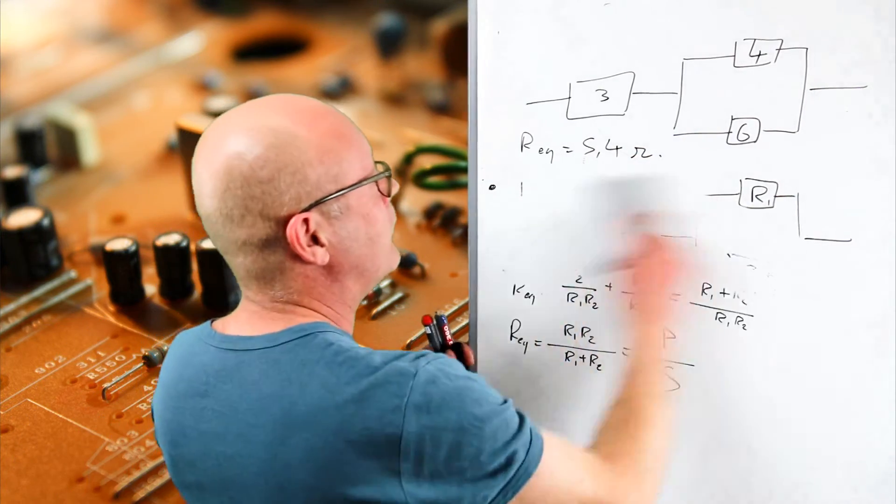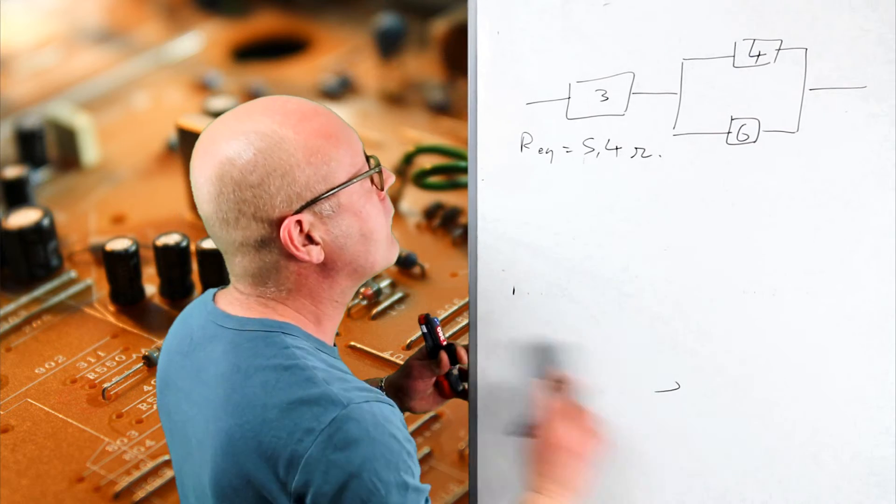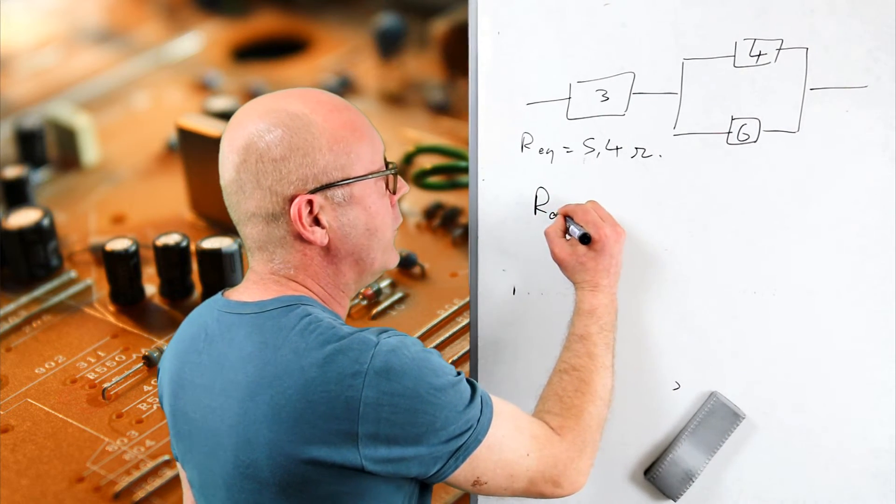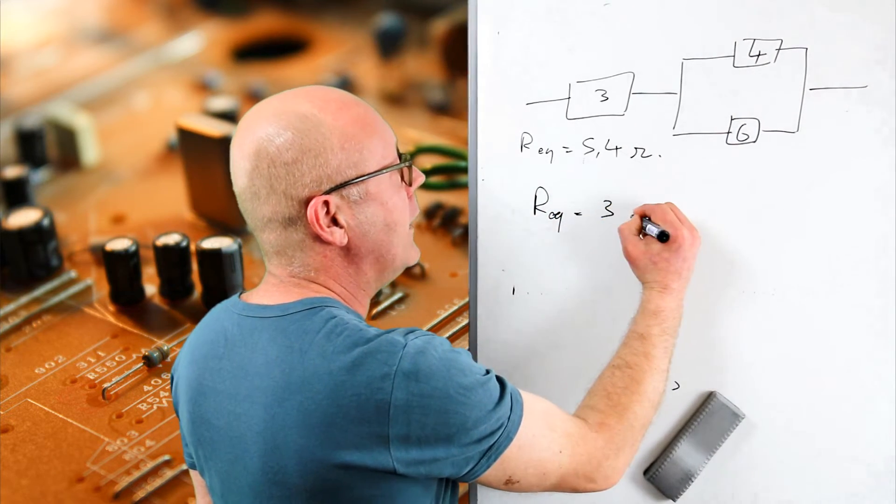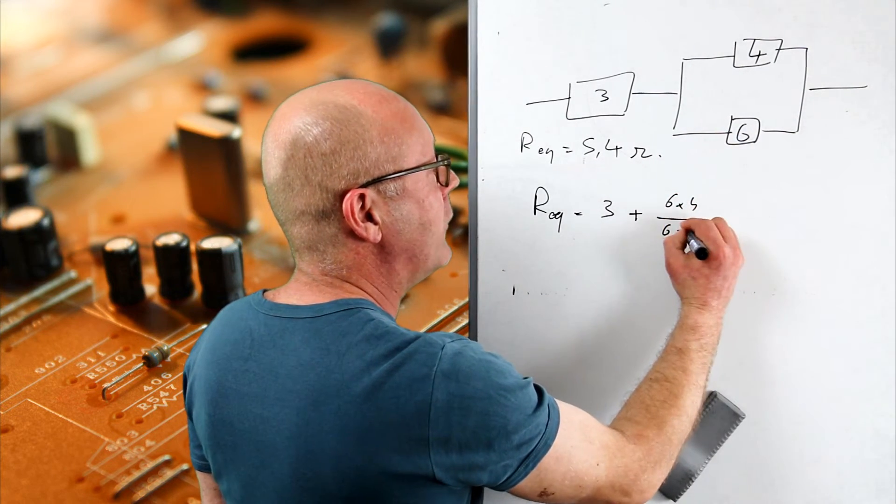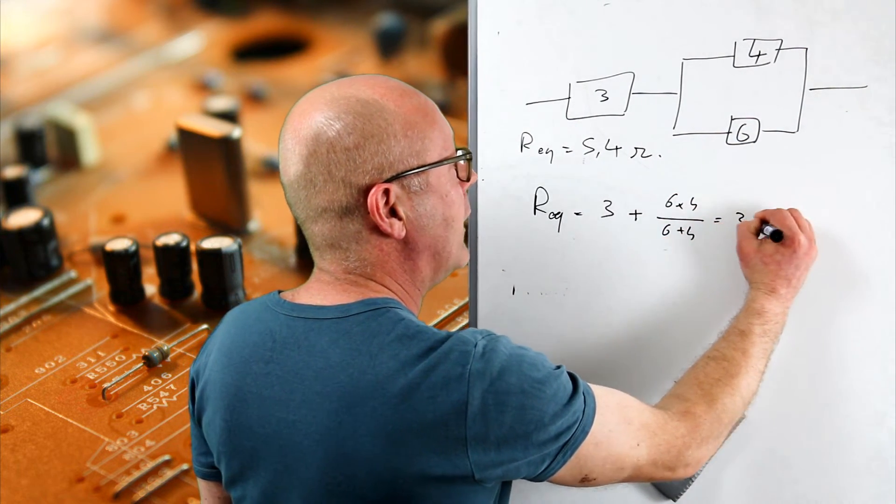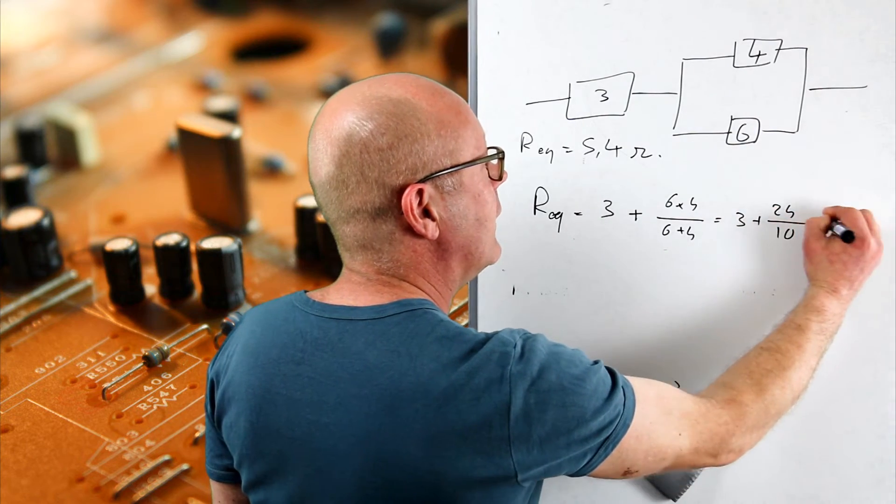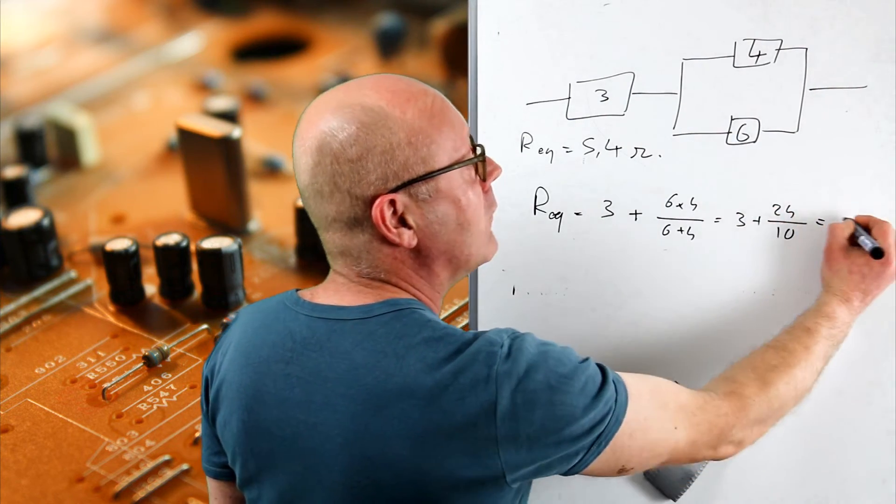Well, easy. I'll show you. My R equivalent is going to be equal to 3 plus 6 by 4 by 6 plus 4. So 3 plus 24 divided by 10. So that's 2.4, giving 5.4.